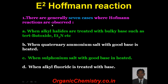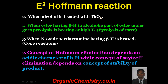For E2 Hoffman, there are generally seven cases where Hoffman elimination is observed. First, when an alkyl halide is treated with a bulky base such as tertiary butoxide or tertiary amine with a bulky alkyl part. Second, when an ammonium salt with a good base is heated, when a sulfonium salt with a good base is heated, or when alkyl fluoride with base is heated. Also, when an ester having beta hydrogen in the alcoholic part undergoes pyrolysis — that is, heating at high temperature. And lastly, when N-oxide of a tertiary amine having beta hydrogen is heated — this is the example of Cope elimination. These are all examples of E2 Hoffman.